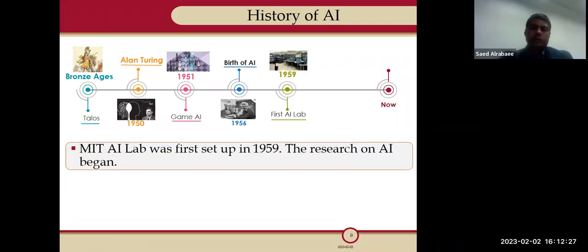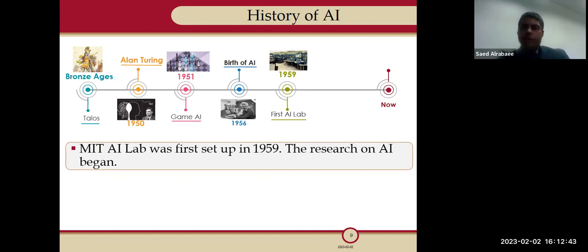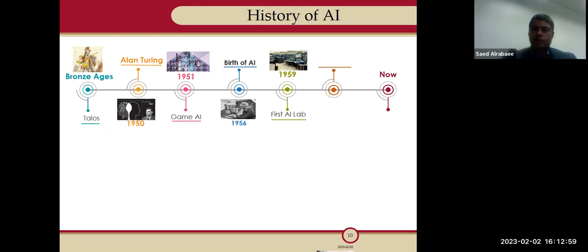After 1956, in 1959, we had the first AI lab. Once John McCarthy coined the term artificial intelligence, MIT was thinking about designing a lab, and they came up with the first AI lab in 1959. They were trying to do some research at that time, so the research on AI began in 1959.